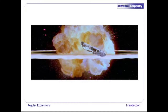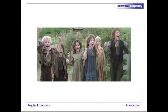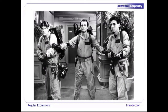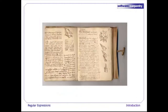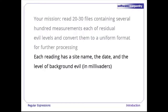A couple of years after the Death Star exploded, a hotshot reporter at the Daily Planet heard that children in the Shire were starting to act a little bit strangely. So your supervisor sent some of his grad students off to collect some data. Things didn't go so well for them, but their notebooks were recovered and later transcribed. Each of the readings has the name of the site, the date the reading was taken on, and the background evil level in millivators.